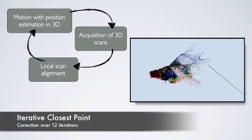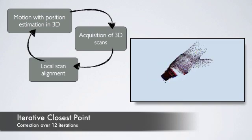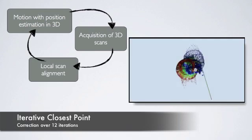Iterative closest point algorithm is then used to align 3D scans and update the robot position approximated by 3D odometry.